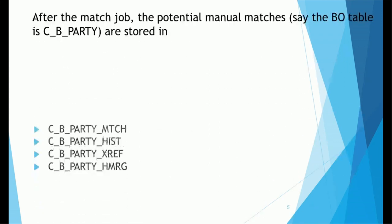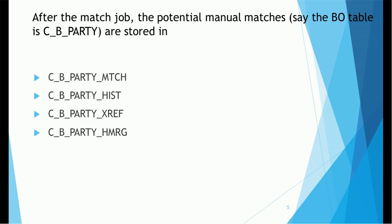Next question: after the match job, potential manual matches are stored in which table? The base object table name prefix is CB. The options are: CB_party_mtcs, CB_party_hist, CB_party (base table), and CB_party_hmrg. The correct answer is CB_party_mtcs. The HMRG table stores merged records — records which are already merged — not potential matches.